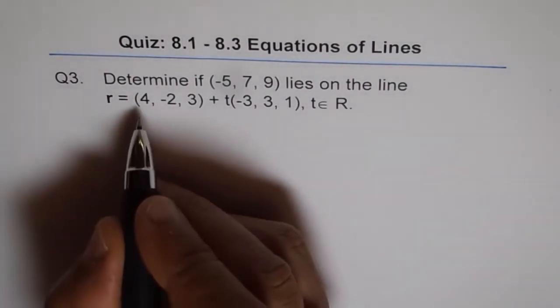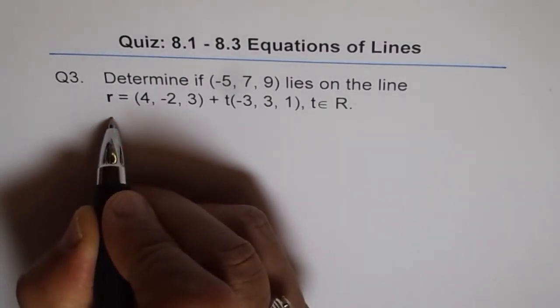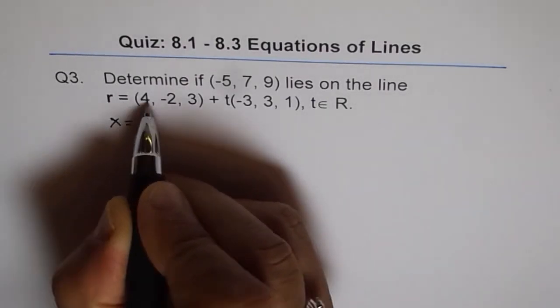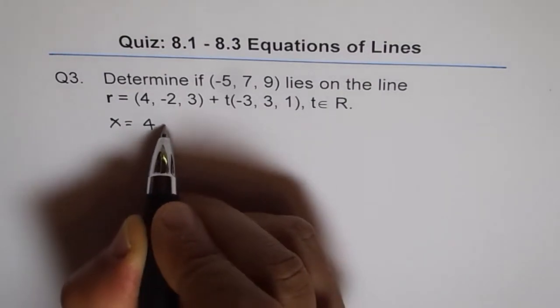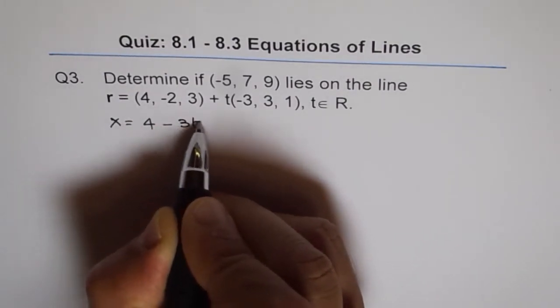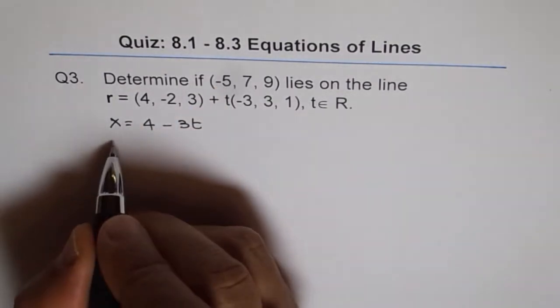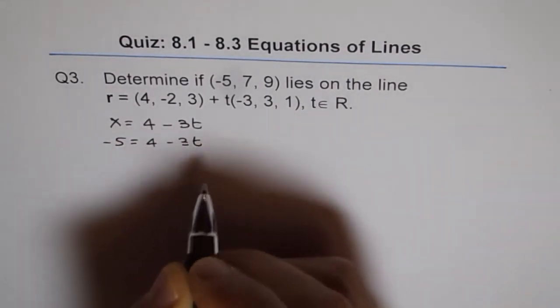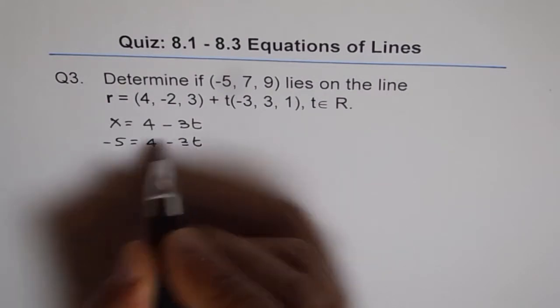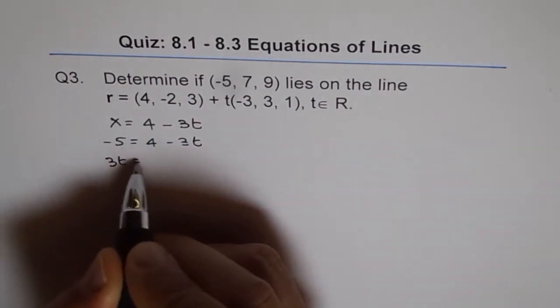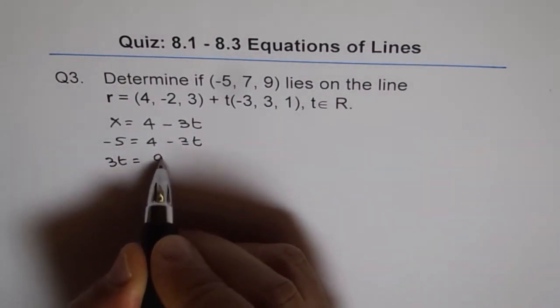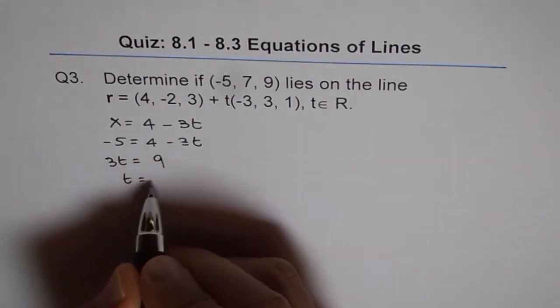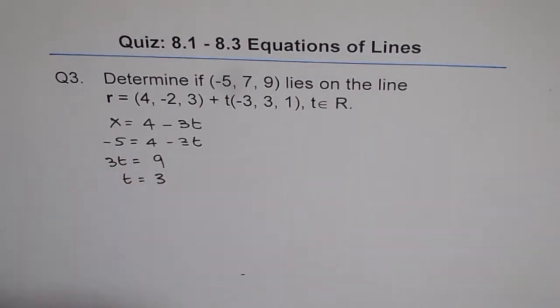So x is equal to 4 - 3t, correct? And the x value is -5 for us. So -5 equals 4 - 3t and from here we can bring 3t this side and -5 that side so it becomes 9, or t equals 9 divided by 3 which is 3.